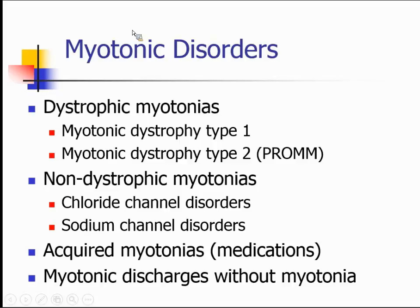I'm going to talk about the non-dystrophic myotonias — myotonias without weakness. These include the chloride channel disorders, specifically the skeletal muscle chloride channel, and those that affect the skeletal muscle sodium channel. I'll briefly discuss acquired myotonias as toxic myotonias from medications that cause myotonic discharges on needle EMG without clinical myotonia, and myopathies where we find myotonic discharges without clinical myotonia that might be confused with myotonic dystrophy.